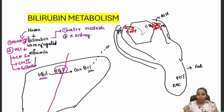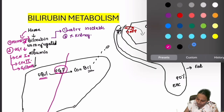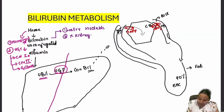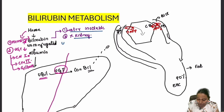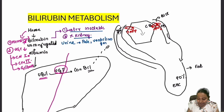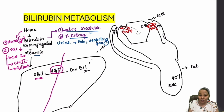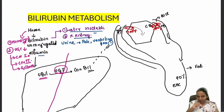In unconjugated hyperbilirubinemia, unconjugated bilirubin is water insoluble, so it is not excreted in the kidney. Therefore urine is pale or normal in color, and urinary urobilinogen is negative. Because unconjugated bilirubin is bound to albumin and does not dissolve in water, it cannot be excreted in the urine.